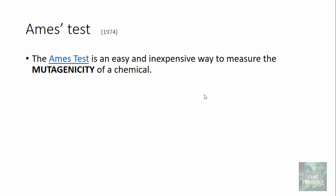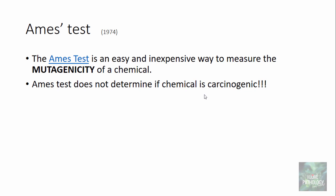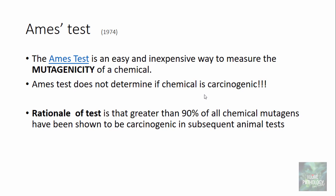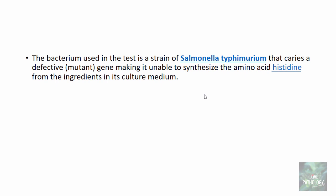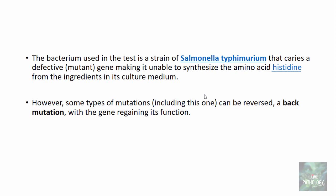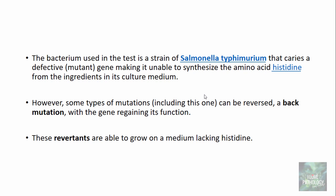The test for mutagenicity is also referred to as the Ames test. Bruce Ames, a professor of biochemistry and molecular biology at the University of California, devised this test in 1974. It is an easy and inexpensive way to measure the mutagenicity of a chemical. The Ames test does not directly determine if a chemical is carcinogenic; rather, the rationale is that greater than 90% of all chemicals shown to be mutagenic have been confirmed as carcinogenic in subsequent animal tests.